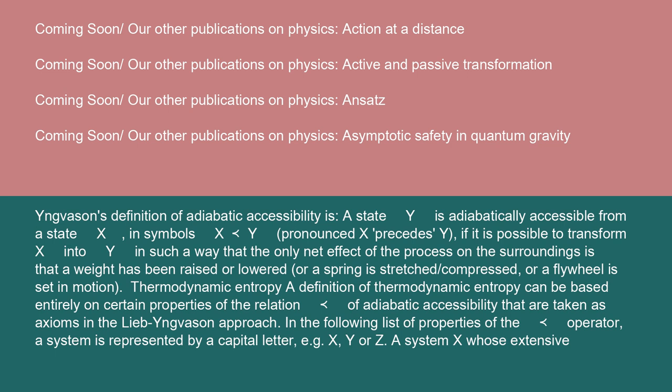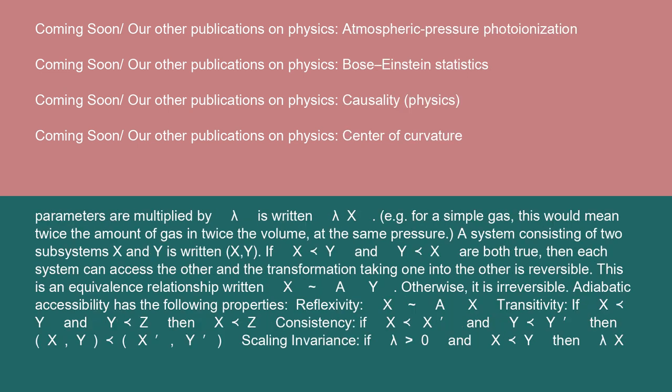A system X whose extensive parameters are multiplied by lambda is written lambda X, e.g. for a simple gas, this would mean twice the amount of gas and twice the volume, at the same pressure.